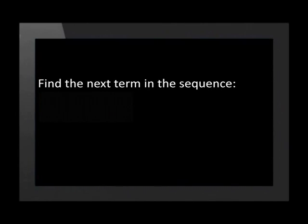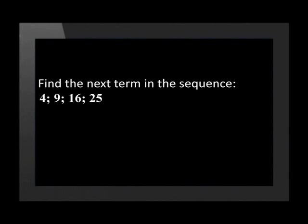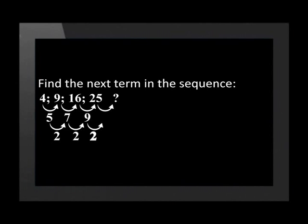Now that we know how to work out the second difference, let's use this skill. Find the next term in the sequence 4, 9, 16, 25. We know it is a quadratic sequence with a common second difference of 2. To work out the next term, we work upwards from the second difference — adding 2 gives us the next first difference of 11. Then 25 plus 11 gives us term 5, which is 36.